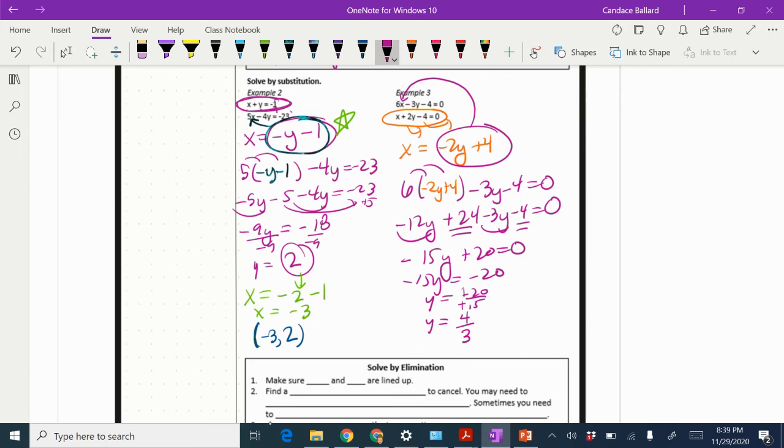Now that I have that, I'm going to substitute it back into probably this orange one right here. So we've got x equals negative 2y.